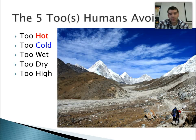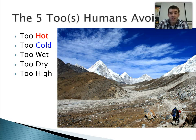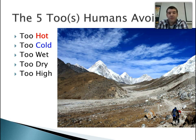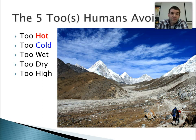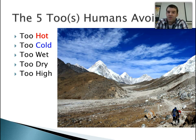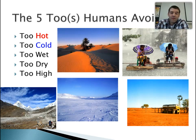Finally, the last one we can look at would be too high. At increased elevations we have a thinner atmosphere. You're not going to see prevalent agriculture, and it's going to be more difficult to sustain human life or society. So generally, those are the five twos: too hot, too cold, too wet, too dry, and too high — the five things that human societies avoid.